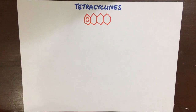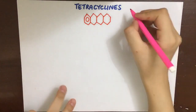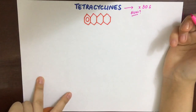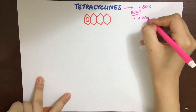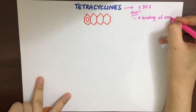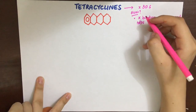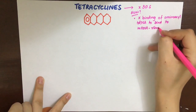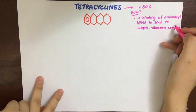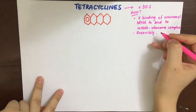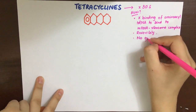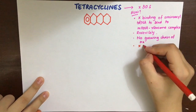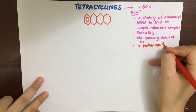After aminoglycosides, we have another class of antibiotics which also act on the 30S subunit of ribosomes — tetracyclines. They have four cyclic rings in their structure. In contrast to aminoglycosides, which block initiation complex formation, tetracyclines prevent aminoacyl-tRNA from binding to the mRNA-ribosome complex by binding to the 30S subunit reversibly, thus preventing the amino acid chain from growing. This results in inhibition of protein synthesis, making tetracyclines bacteriostatic in nature.